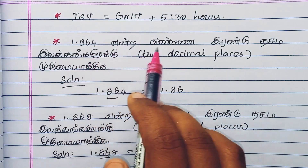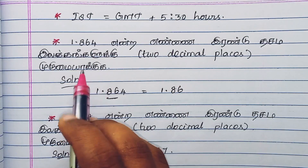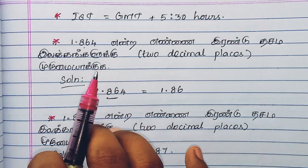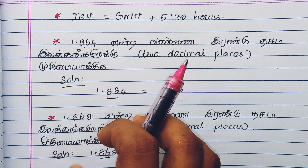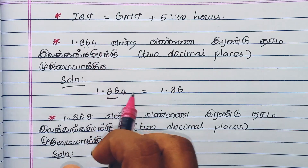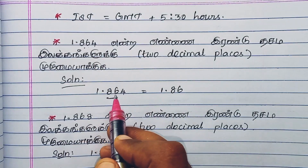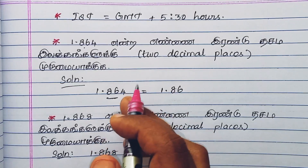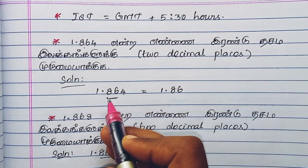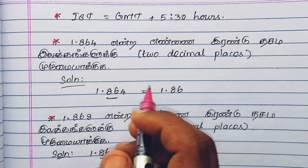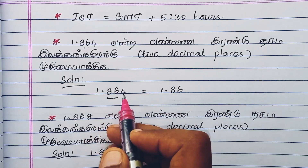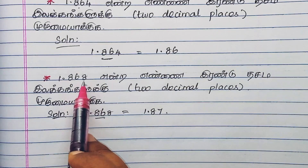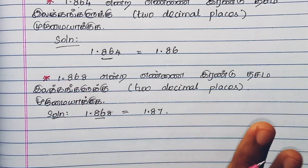Now, for significant figures: we have the number 1.864. We will round to 2 decimal places. The digit after the 2nd decimal place is 4 — since 4 is less than 5, we remove that digit. If the digit were 5 or more, we would add one to the preceding digit. So for 7.64, we get 7.6; for 7.68, since 8 is greater than 5, it rounds up.